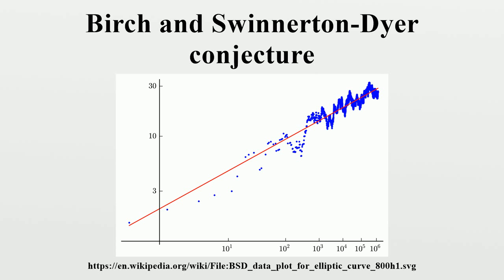History: In the early 1960s, Peter Swinnerton-Dyer used the EDSAC computer at the University of Cambridge Computer Laboratory to calculate the number of points modulo p for a large number of primes p on elliptic curves whose rank was known. From these numerical results, Birch and Swinnerton-Dyer conjectured that N(p) for a curve with rank r obeys an asymptotic law where C is a constant. Initially this was based on somewhat tenuous trends in graphical plots, which induced a measure of skepticism. Over time the numerical evidence stacked up, leading them to make a general conjecture about the behavior of a curve's L-function L at s equals 1 — namely that it would have a zero of order r at this point.